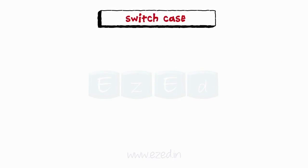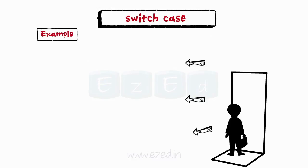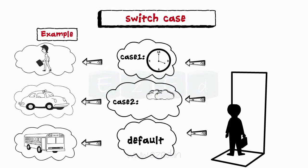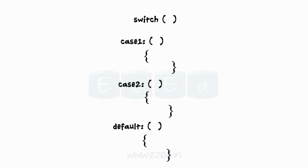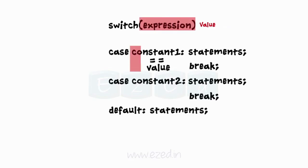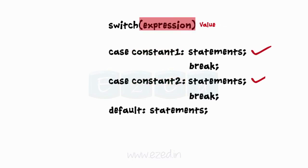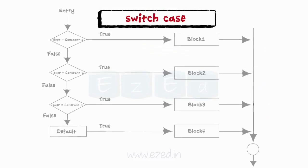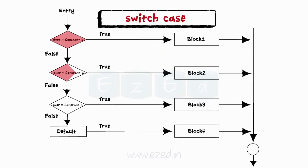The last conditional control structure is the switch case. When there are a number of alternatives, a switch statement is used — it handles multi-way decisions and reduces the effort of writing multiple if statements. The condition is evaluated to get a value, which is matched to each case constant. No two case constants within the same switch can have the same value. Control passes to the matching case and execution proceeds until a break statement transfers control out of the switch body.